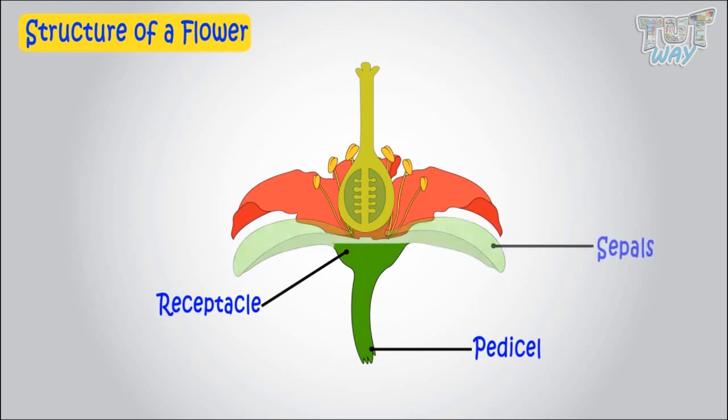And all other parts are arranged in four whorls. First, green sepals. Second, colorful petals. Third, stamen, male reproductive part.